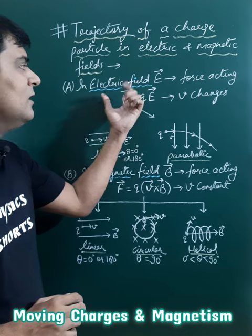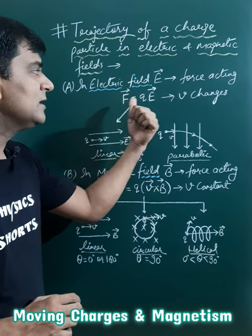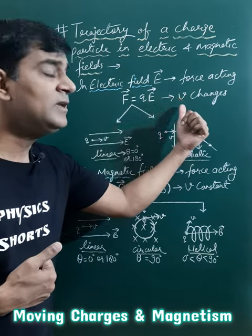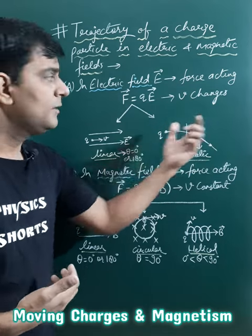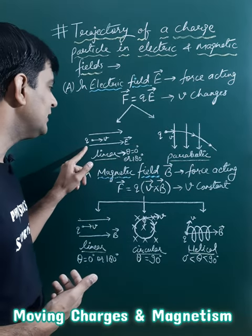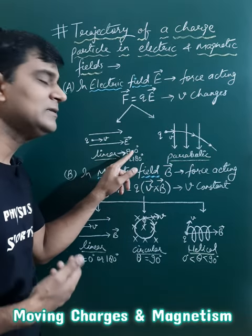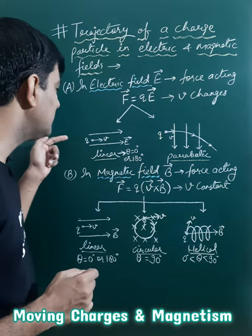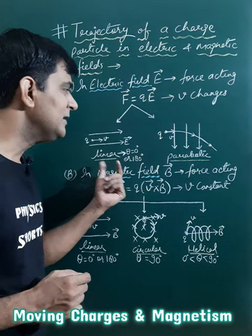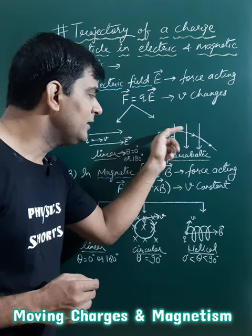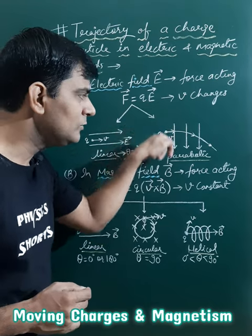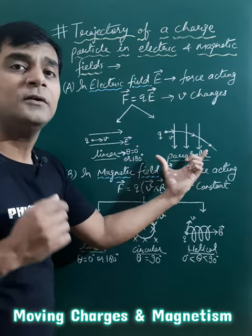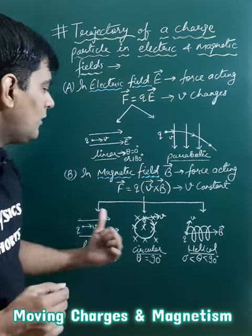In an electric field, the force acting on charge q is qE, and due to this force, the speed of the charged particle changes. In the first case, when theta is 0° or 180°, the trajectory will be linear. When the charged particle enters perpendicular to the electric field, the trajectory will be parabolic.